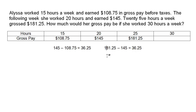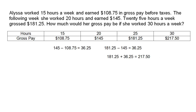To get the value that she would make after working 30 hours a week, add the $181.25 to the $36.25. Because the hours are increasing by a constant rate and the gross pay is requested for the next incremental value, the pattern can be written simply as the three gross pay values separated by commas with three dots following it. The three dots, known as an ellipsis, indicate that the pattern continues. In this real-world example, the pattern would be accurate for values between 0 and 40 hours.